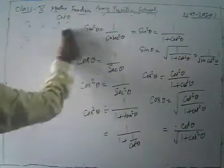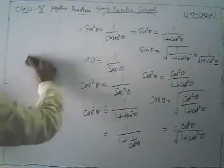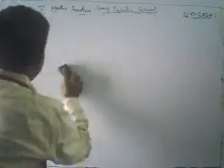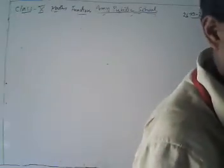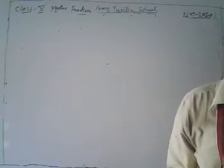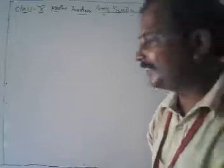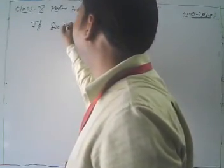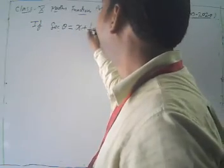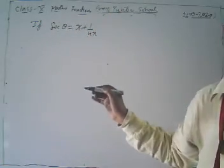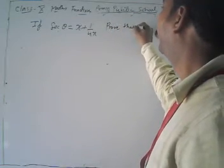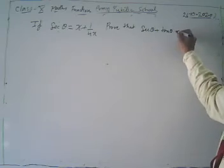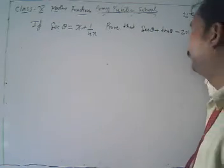Now let us take some problems that have come in last year's board exams and solve them one by one. First problem: if sec θ = x + 1/(4x), then we have to prove that sec θ + tan θ is either 2x or 1/(2x).